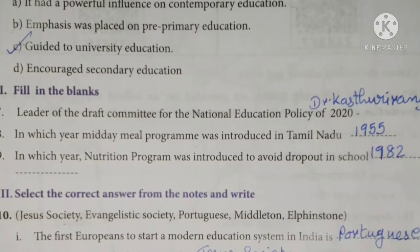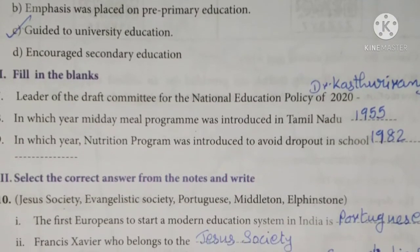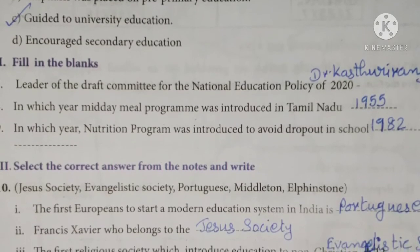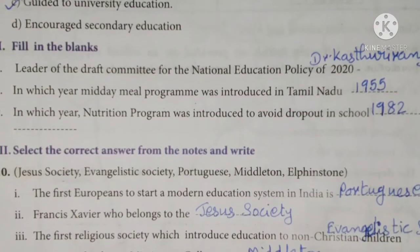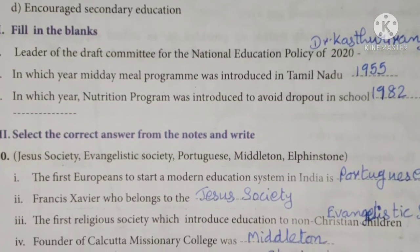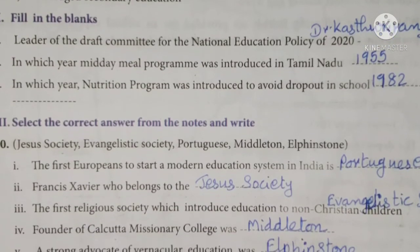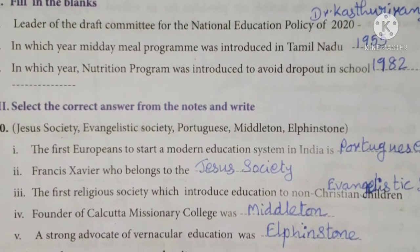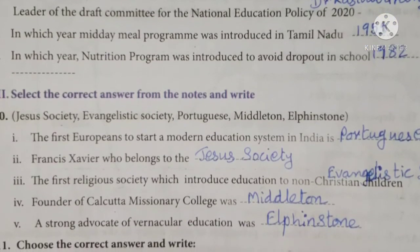Select the correct answer from the notes and write. First question: The first European to start a modern education system in India is Portuguese. Francis Xavier, who belongs to the Jesus Society — the first religious society which introduced education to non-Christian children.